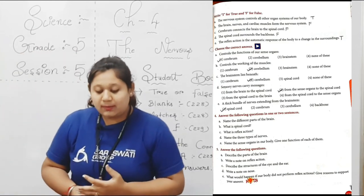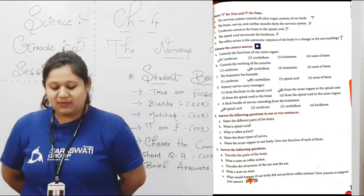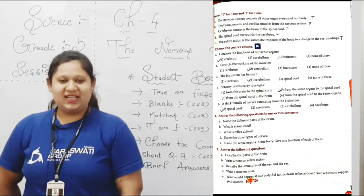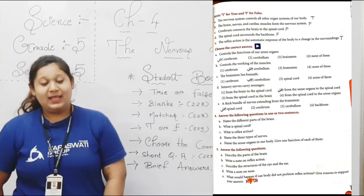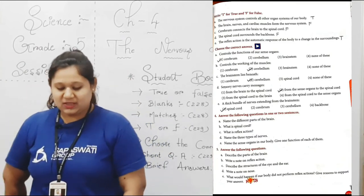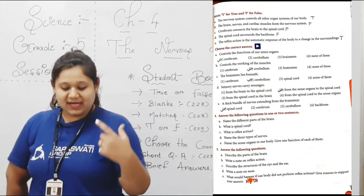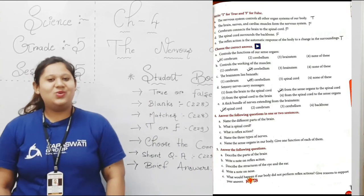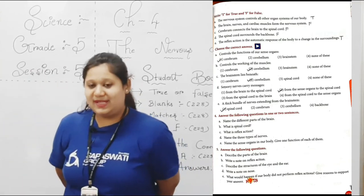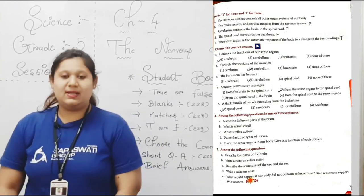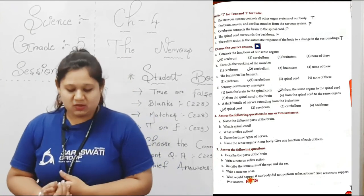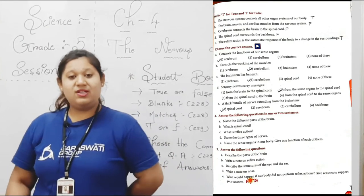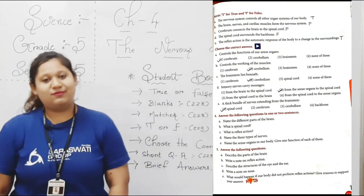Statement B: The brain knows the cardiac muscles from the nervous system. Brain knows aur cardiac muscles — woh nervous system ke part nahi hain. Write down F. Statement C: Cerebrum connects the brain to the spinal cord — no. Write down F. Statement D: The spinal cord surrounds the backbone — no, this statement is false. Write down F.